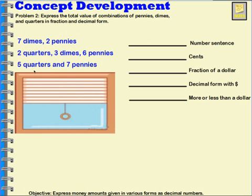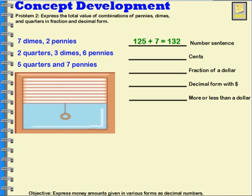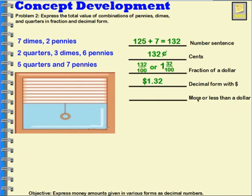Let's try five quarters and seven pennies. It takes four quarters to make a dollar, so five quarters would be a hundred and twenty-five cents. Seven pennies would be seven cents. So the number sentence gives us a hundred and thirty-two cents. The fractional amount would be a hundred and thirty-two hundredths — or one whole dollar and thirty-two hundredths of another dollar. In decimal form we would write one decimal three two. A dollar thirty-two is greater than a dollar.